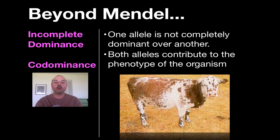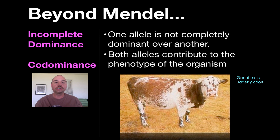Carnations are not the only organism to do this — a great example from the animal kingdom is this cow, which has both brown and white parts. Rather than a merging of colors like in the carnation, since a cow is a more complicated organism, we get a spotted cow phenotype.